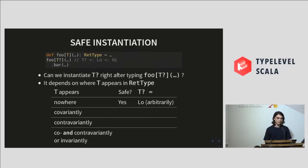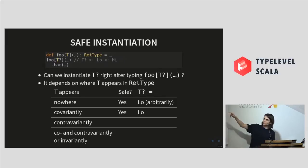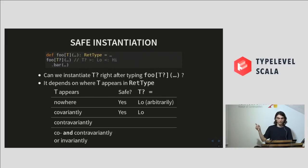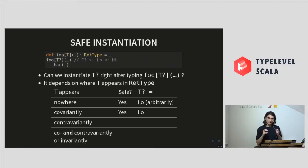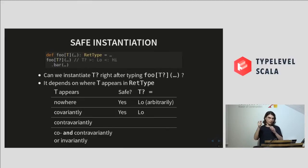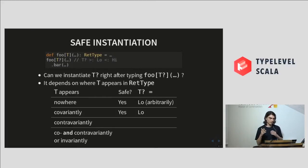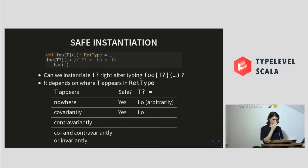If T appears covariantly — for example, if the return type was List of T — then instantiation is also safe and we should pick the lower bound. So if T was bounded by Nothing and Int, we should pick Nothing and get List of Nothing. This works because of a property of the type system called narrowing, which means that if you have some expression that type-checks and you know a more precise type for a term in that expression, you can replace the type of that term with this more precise type — for example, replace List of Int by List of Nothing. Narrowing holds most of the time, and when we are doing our safe instantiation it holds, so we're fine.